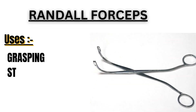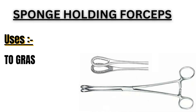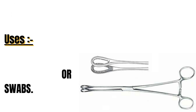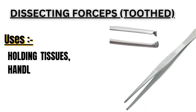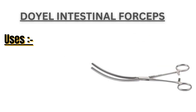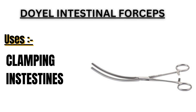Randall Forceps: it is used for grasping stones or polyps. Sponge Holding Forceps: it is used to grasp and hold sponges or swabs. Dissecting Forceps Toothed: it is used for holding tissues and handling sterile dressings. Doyle Intestinal Forceps: it is used for clamping intestines.